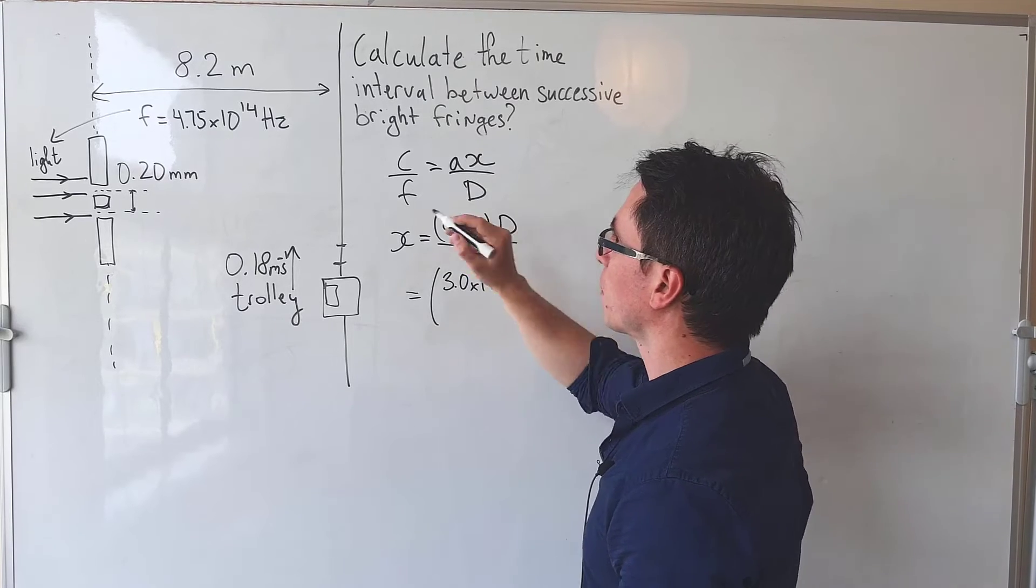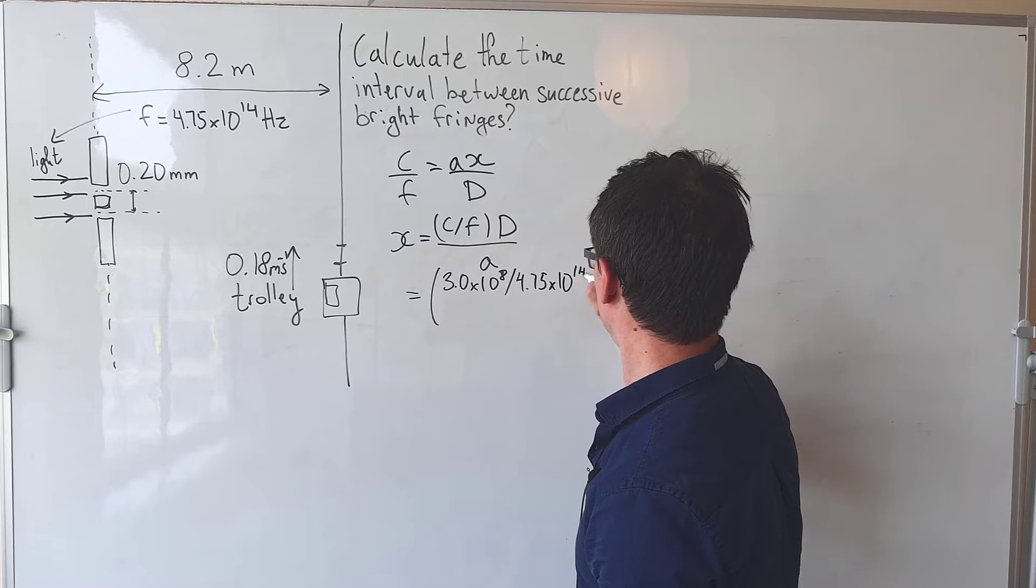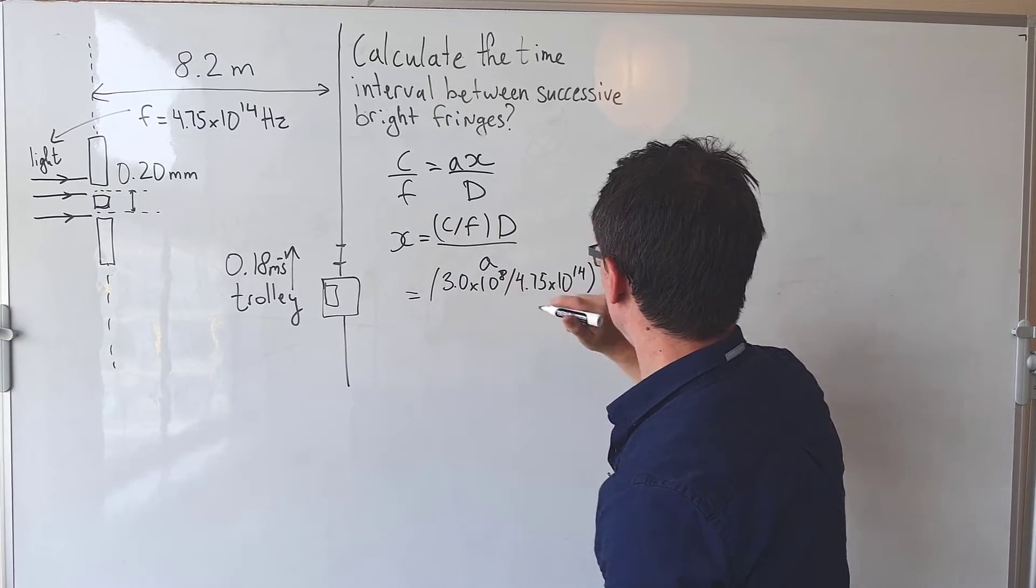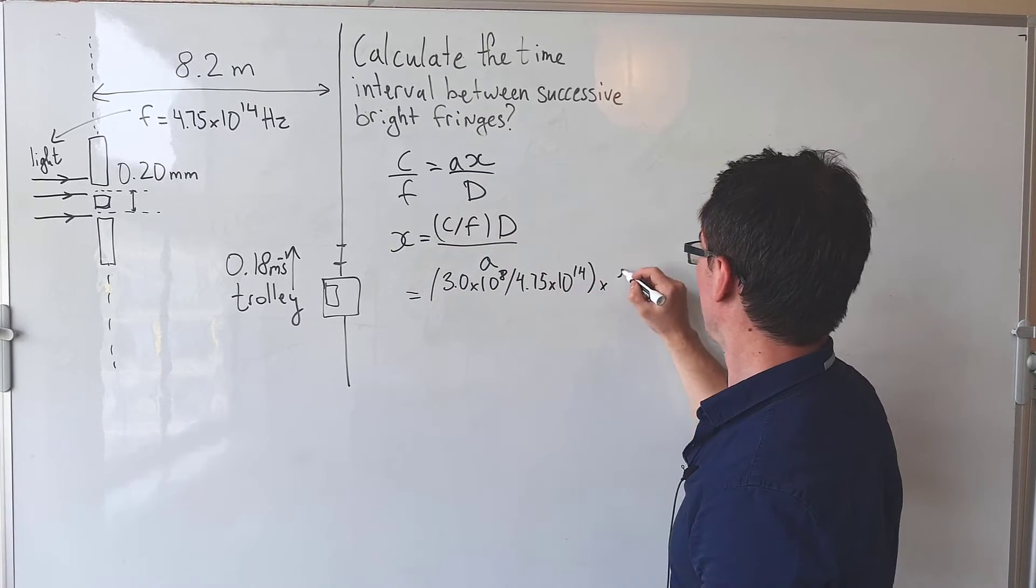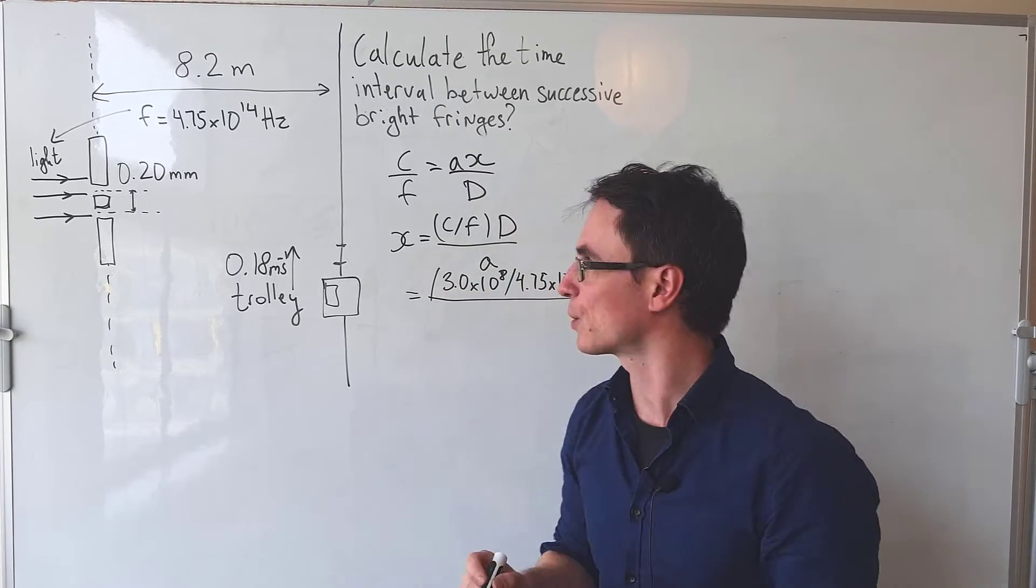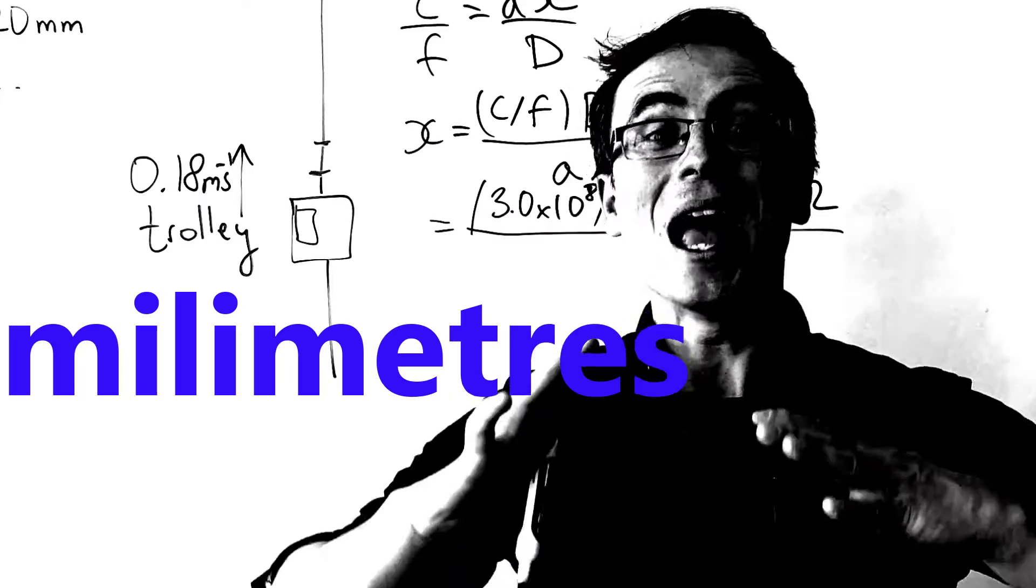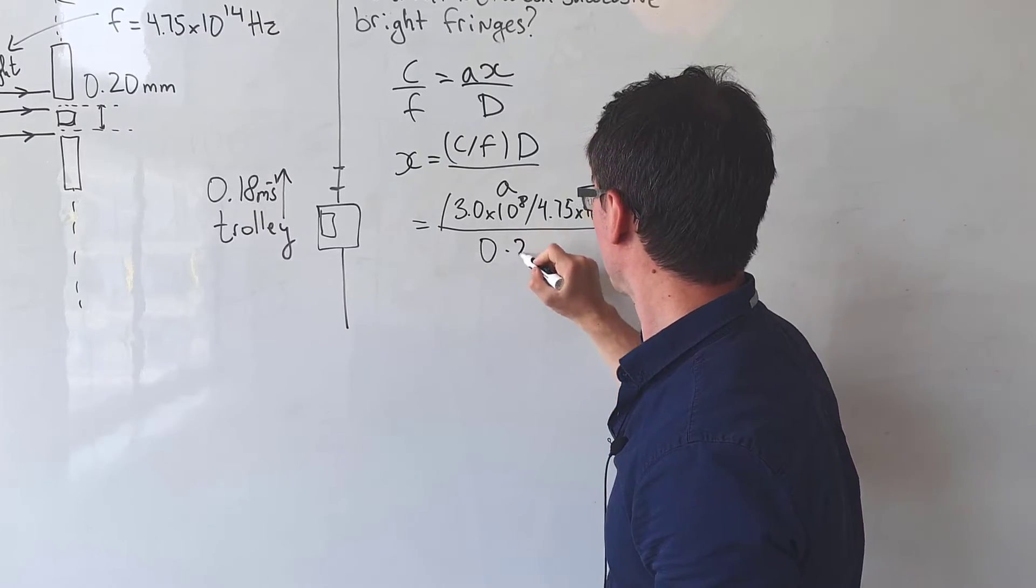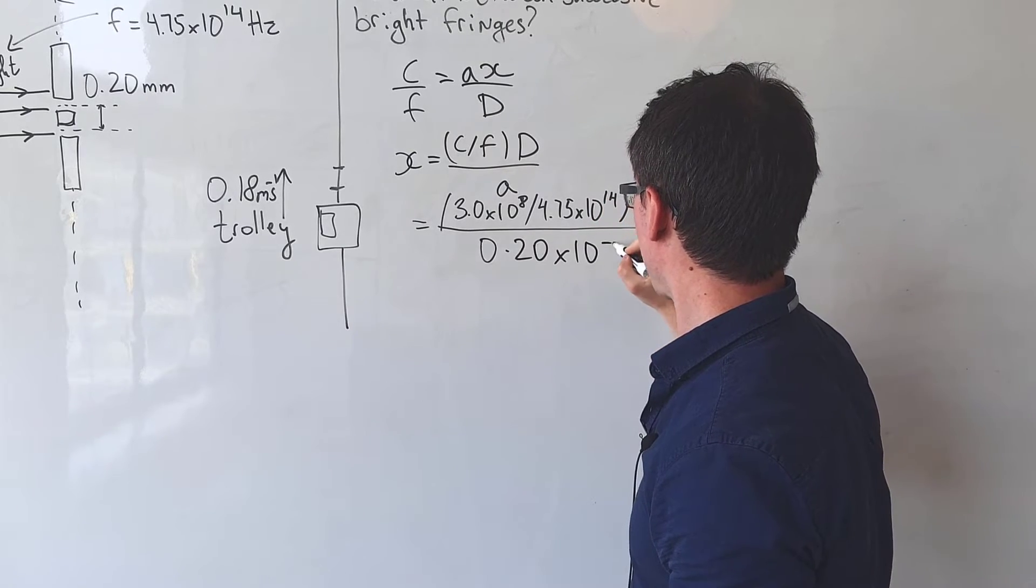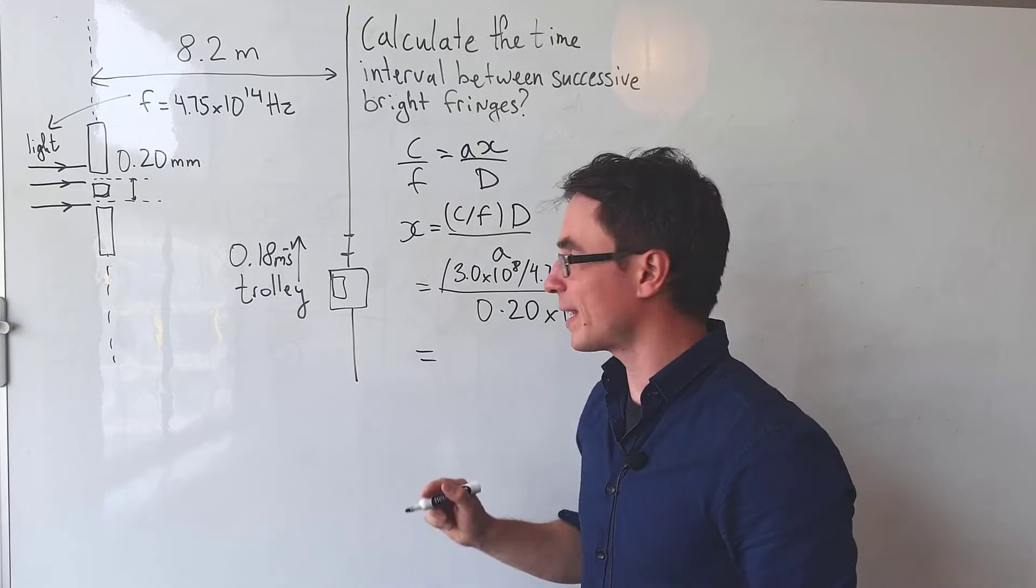Now the distance d is 8.2 meters and let's divide that by a which is the slit separation which is 0.20 millimeters, that is 0.20 times 10 to the power of minus 3. And if we put this into a calculator we're going to get approximately 0.026 meters for a fringe separation.